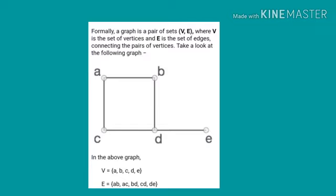In the above graph, V is equal to the set of A, B, C, D, and E. E is equal to the set of AB, AC, BD, CD, and DE.